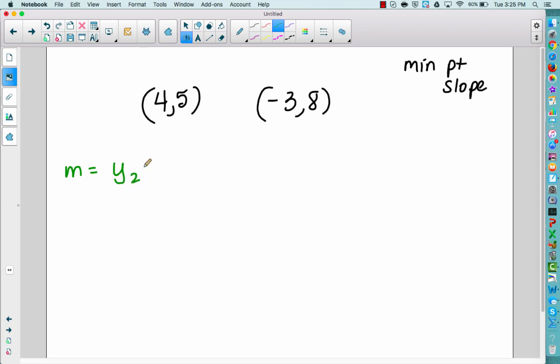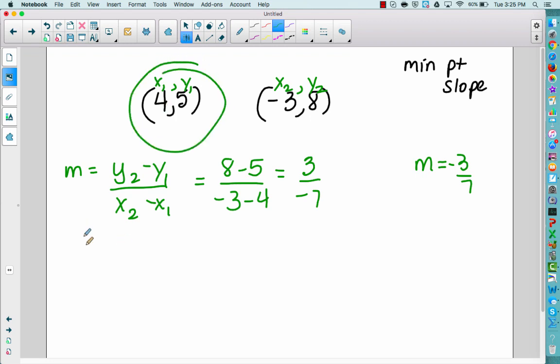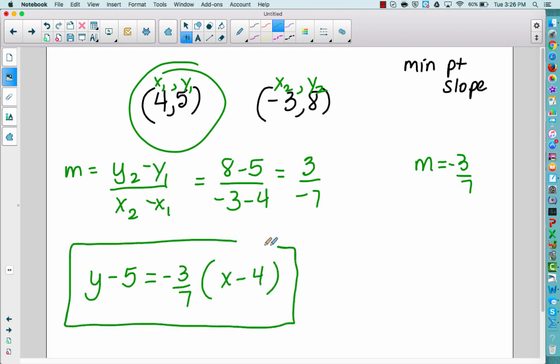So slope: y₂ minus y₁ all over x₂ minus x₁. I'm going to label my points. Plug them in: 8 minus 5 over -3 minus 4. So 8 minus 5 is 3. -3 minus 4 is -7. I've got my slope. I've got my m of -3/7. And I pick one of the points, whichever one you want. I tend to pick the positive numbers if they're positive. So y minus 5 equals -3/7 times (x - 4). And there is the point-slope form of the equation of a line.